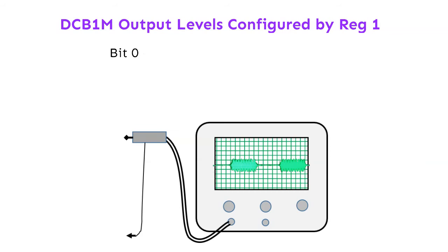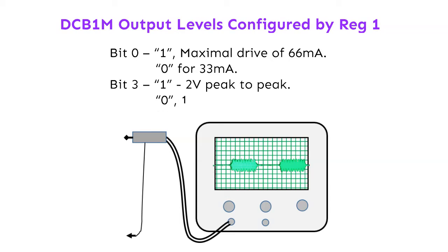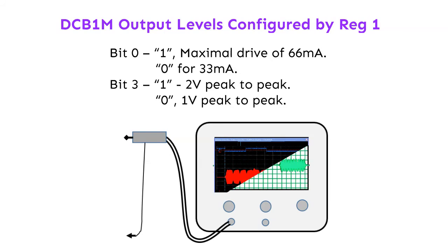Output levels are configured by Reg 1. Bit 0: when 1, maximal drive of 66 mA; when 0, 33 mA. Bit 3: when 1, 2 volts peak to peak; when 0, 1 volt peak to peak.